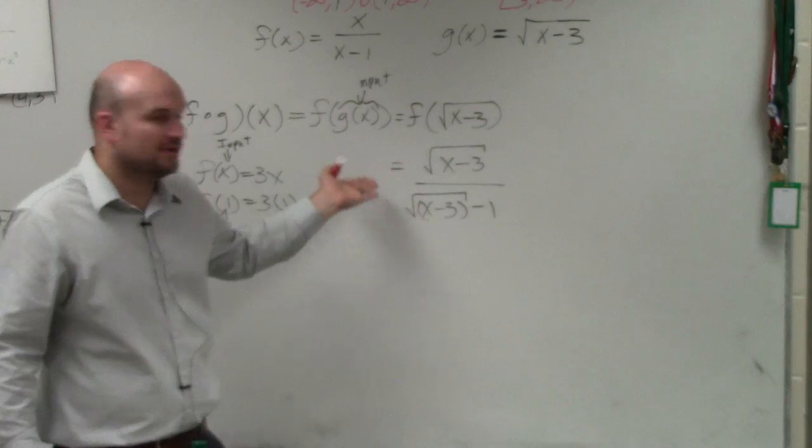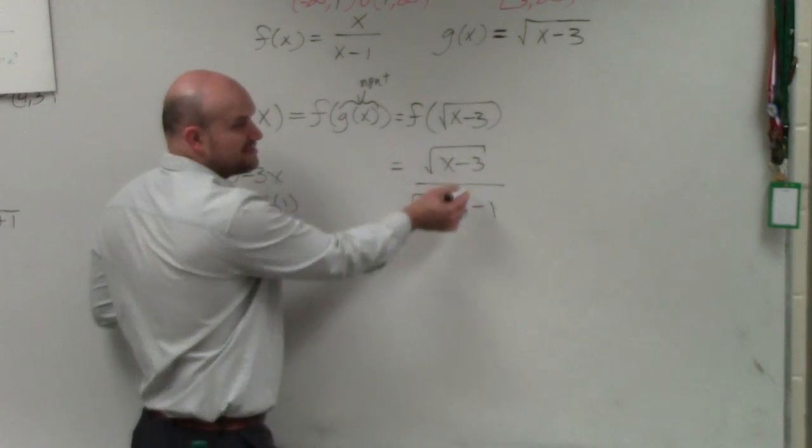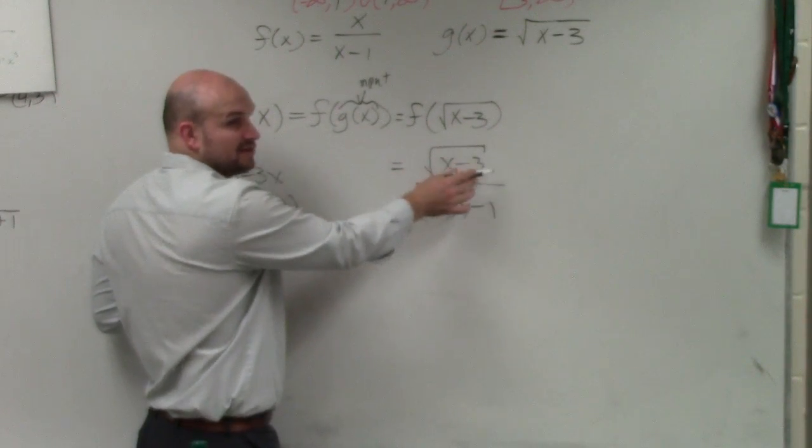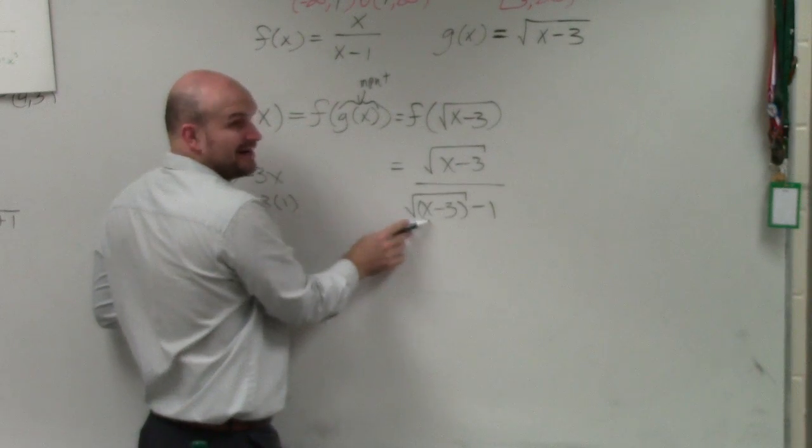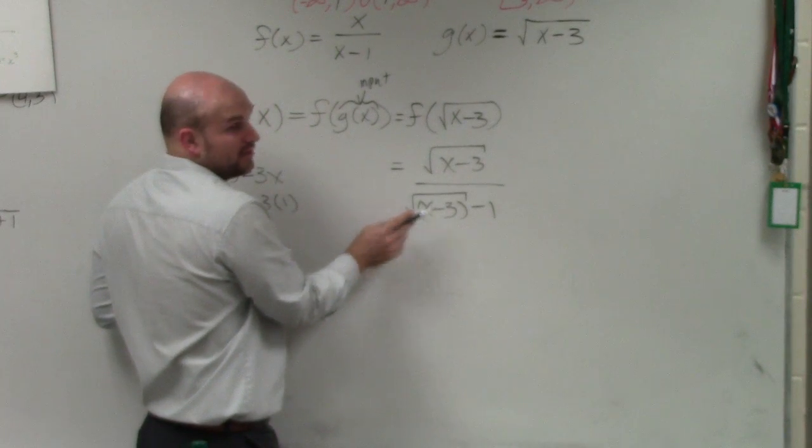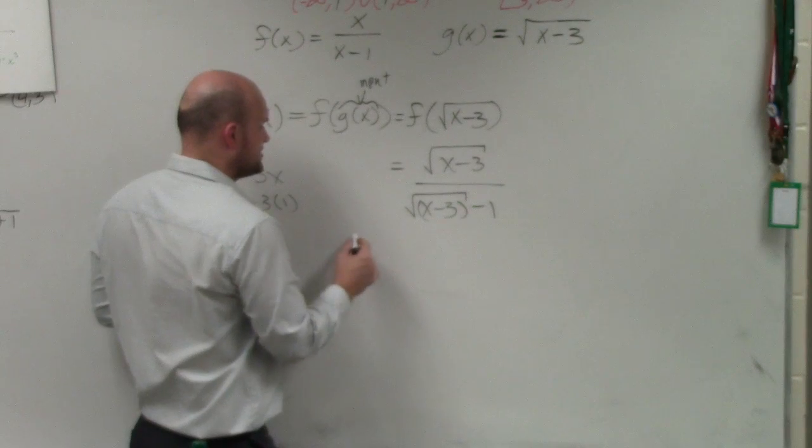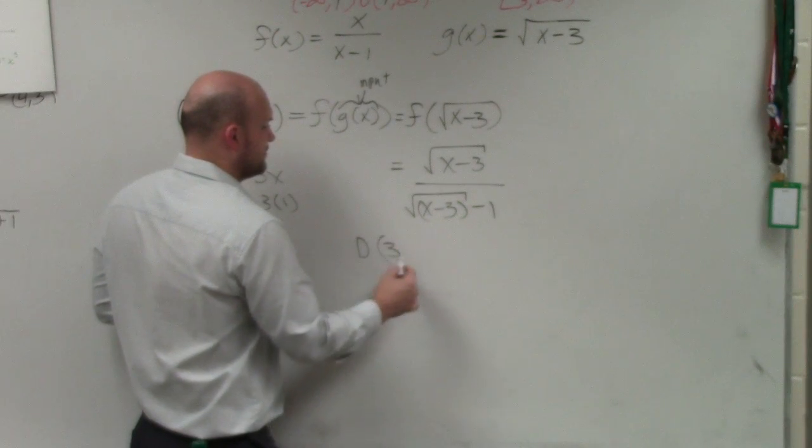So again, let's go and look at our domain. We have our two constraints, right? It has to be greater than or equal to 3 up top here, and it has to be greater than or equal to 3 here, but it can't equal 3 or greater than 3 here. So therefore, my domain is 3 to infinity.